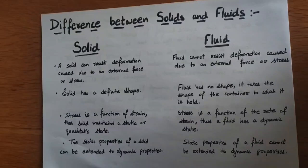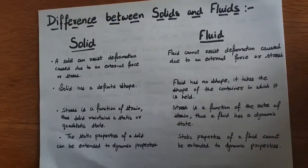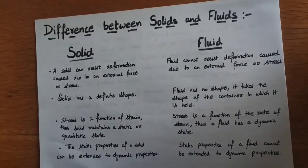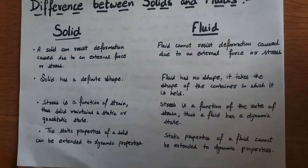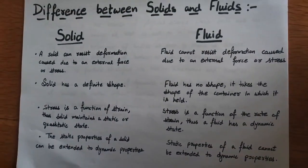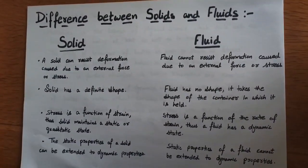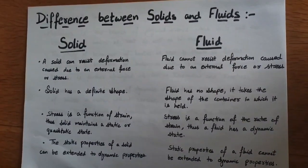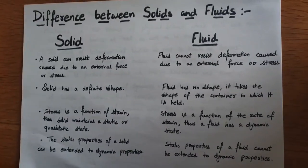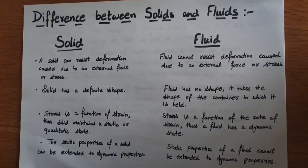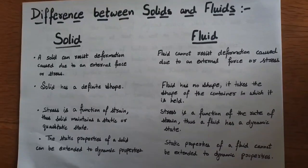A fluid takes the shape of the container in which it is held. For example, water — whenever you put water in a container, it takes the shape of that particular container. It does not have its own definite shape. In a solid, stress is a function of strain.